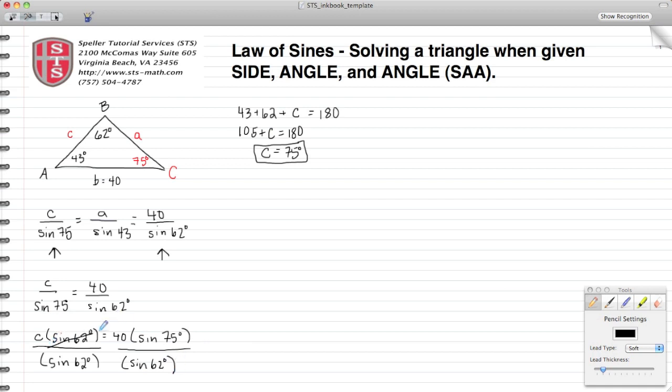All right and doing so these cancel out leaving me with C is equal to this fraction here. And when I put that in the calculator, I find out that C is approximately - that's what the squiggly lines mean - C is approximately 43.